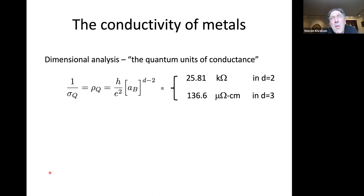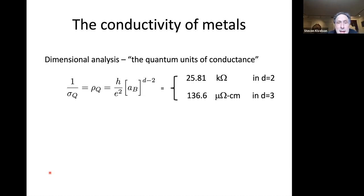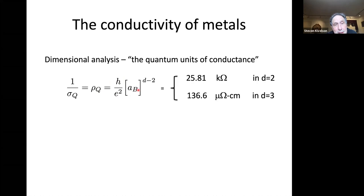Now let me get to the conductivity, which is the main measured quantity I'll be discussing in the remainder of this talk. I'm going to start by doing something that's rarely done — dimensional analysis. What is the quantum unit of conductance? If you wanted to produce a quantum of conductance referring only to fundamental constants of nature, you would construct it like this: the quantum of resistance is h over e-squared times the Bohr radius to the d minus two power, where d is the number of spatial dimensions. For d equals two, this is the familiar Klitzing constant — 25 kilo-ohms — which shows up in the quantum Hall effect.